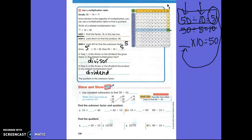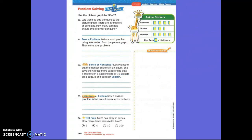Now, you guys get to work together to find your division problems with ten. Boys and girls, number thirty. Read the story problem. My Lord wants to add penguins to the picture graph. They are thirty stickers of penguins. How many symbols should a file draw for penguins? So, look at this problem, or look at this graph. Is penguins on there? No. He wants to add penguins to it.